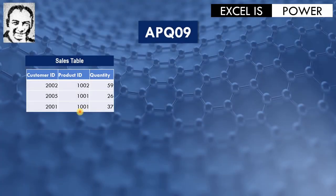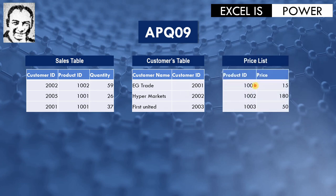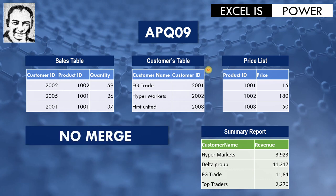We have three tables. The first one is the sales table — the information we have is the customer ID, product ID, and the quantity for each line of transaction. The second table is the customers table containing customer name and customer ID. The third table is the price list containing the product ID together with the price for each product. The requirement is to create a summary report, calculate the revenue, and put it in a summary report.